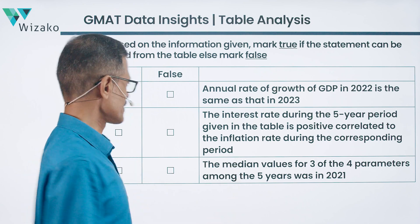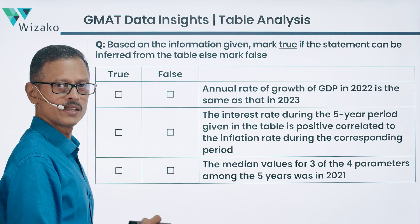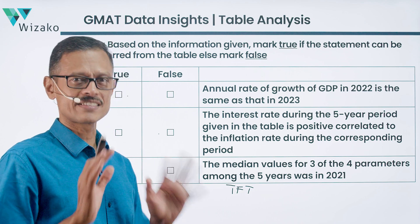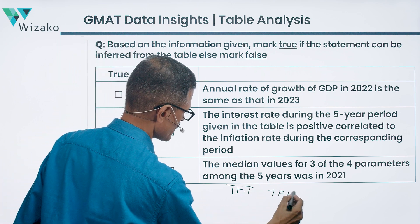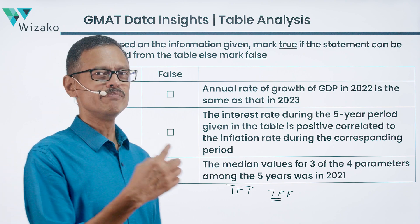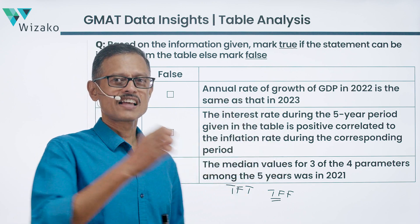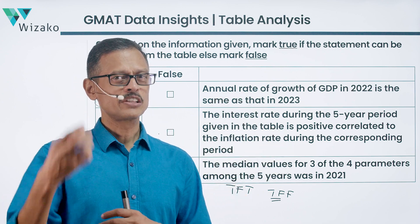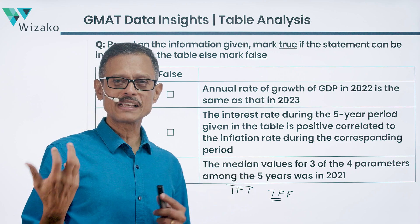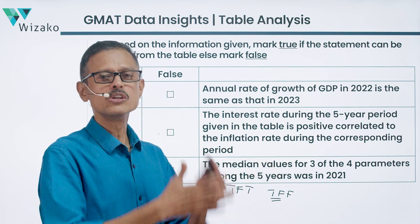Note one important thing: unless you get all three statements right, you will not earn credit for this question — there is no partial credit. If the correct answer is true, false, true, and you mark true, false, false, you get no credit at all, even though two parts were correct. This is what makes the data insights section tricky — most questions have multiple components, and a single error in judgment or calculation costs you all credit.